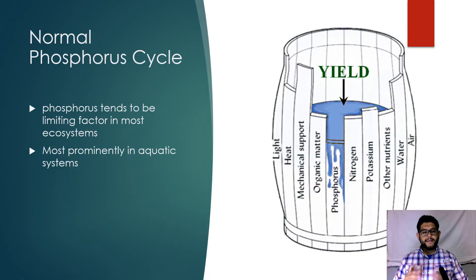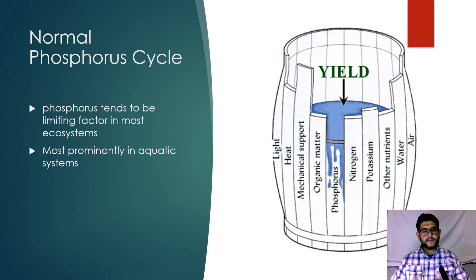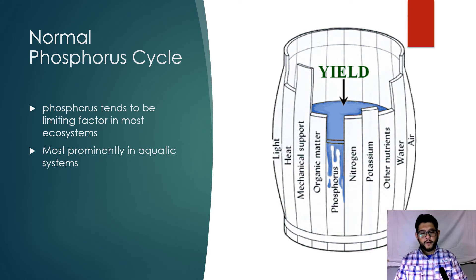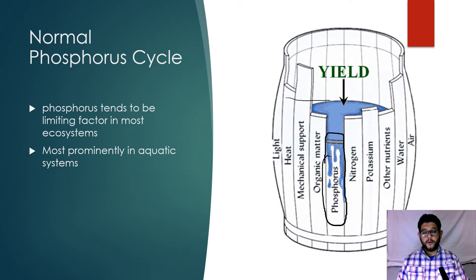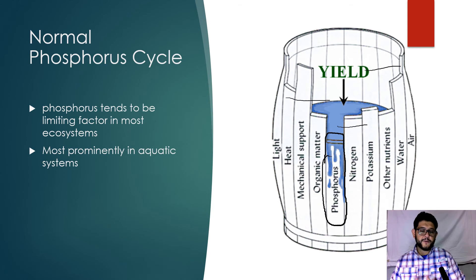When I say the term 'limiting factor,' think of a barrel made of different pieces of wood, but some pieces are shorter than the rest. You're limited to how much you can fill that barrel by the shortest piece. If we're talking about nitrogen, potassium, sulfur, water, air, light, or heat — these are all limiting factors — but phosphorus is the shortest piece, limiting how much you can hold.